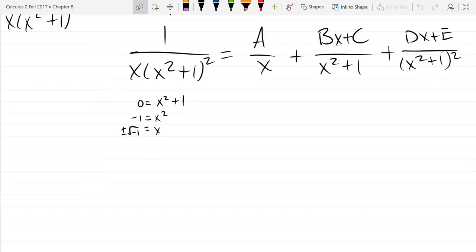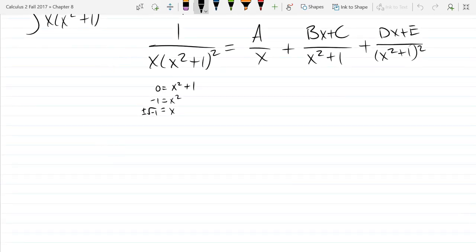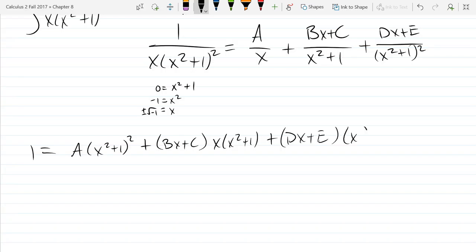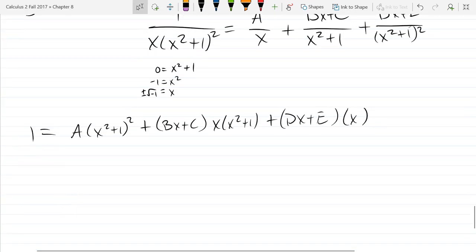All right, so the first thing we did was write out the three terms that we get with the undetermined coefficient polynomial on top, and now we're going to multiply by the full denominator so we have no more fractions. So that's always a first move.